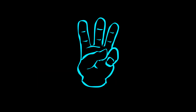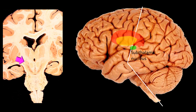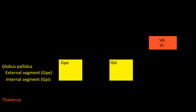The third structure, represented as a green oval, is the subthalamic nucleus, which you can see indicated by the arrow in the cut specimen. The thalamus is above it, hence the name subthalamic nucleus. To the basic figure I will add the subthalamic nucleus as a green rectangle.